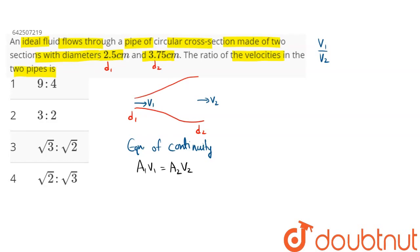We can say area at this junction point is πR² and radius is D by 2. So this becomes π × D1²/4 × V1 equals similarly π × R2², where R2 is D2 by 2, that is D2²/4 × V2.